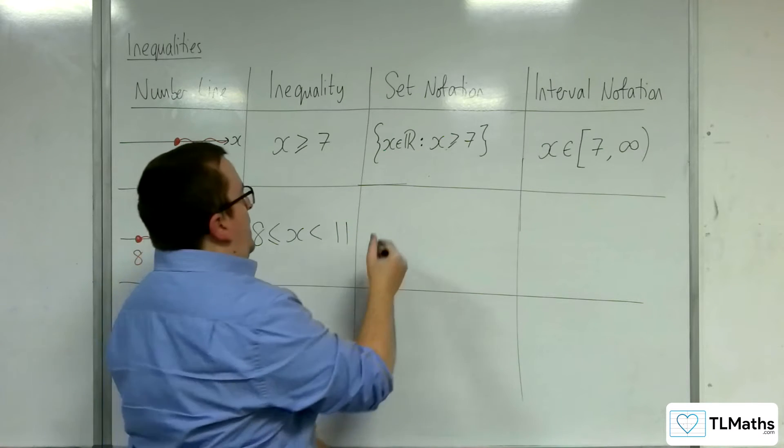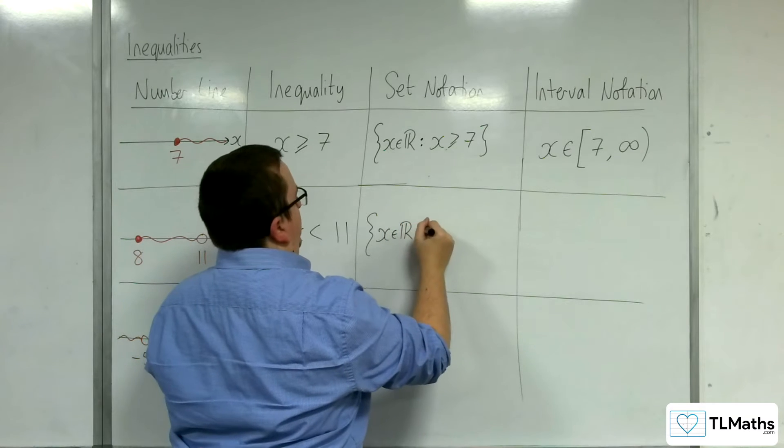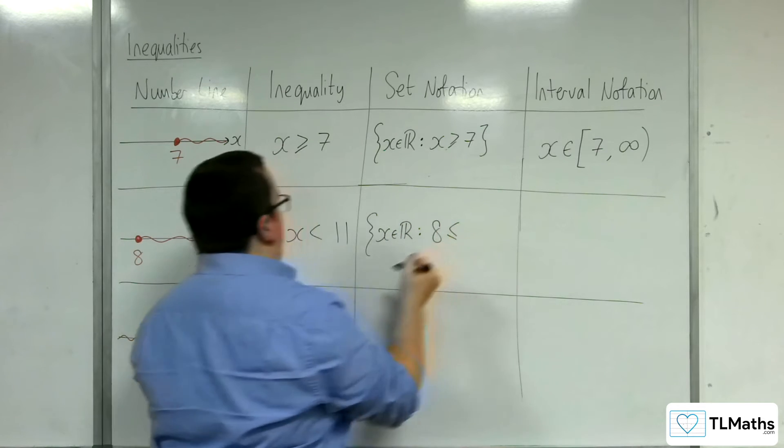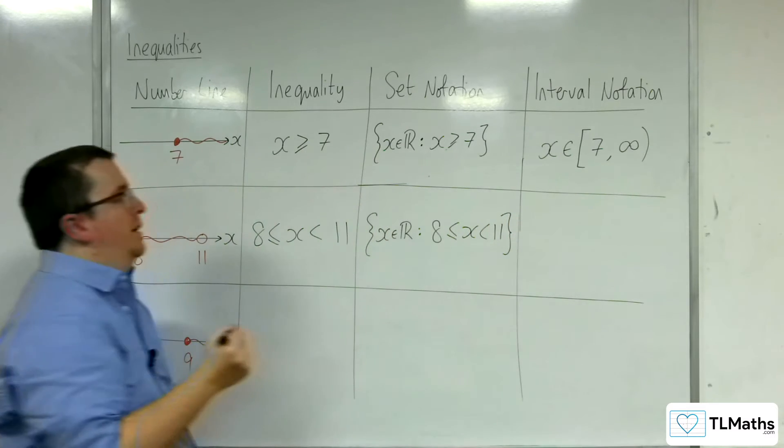So the set notation: x belongs to the real numbers, such that x is greater than or equal to 8, but less than 11. And close the curly bracket.